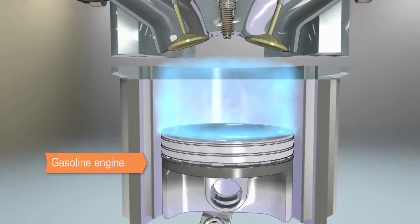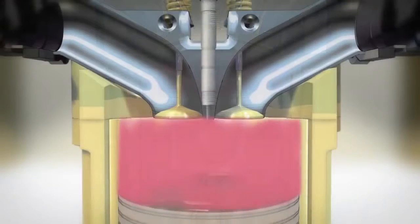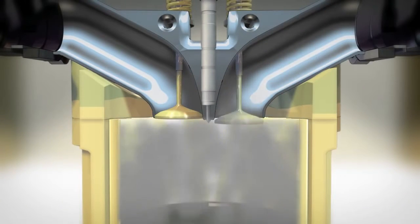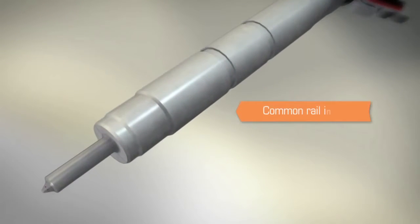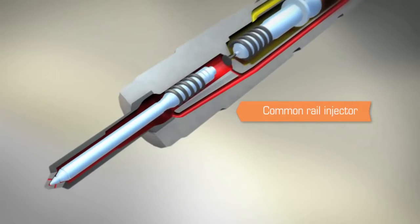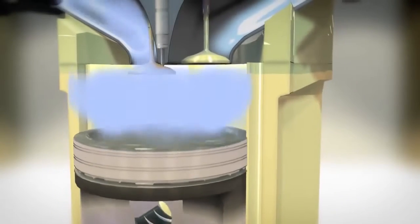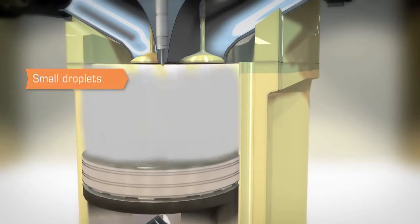While gasoline engines rely on spark plugs to ignite a mixture of fuel and air, diesel engines work differently, using the compression of the fuel and air mixture to generate heat and combustion. Fuel is delivered to the engine through highly engineered injectors that spray diesel fuel directly into the combustion chamber. The goal is to create very small droplets of fuel that will easily vaporize, combust, and burn completely.